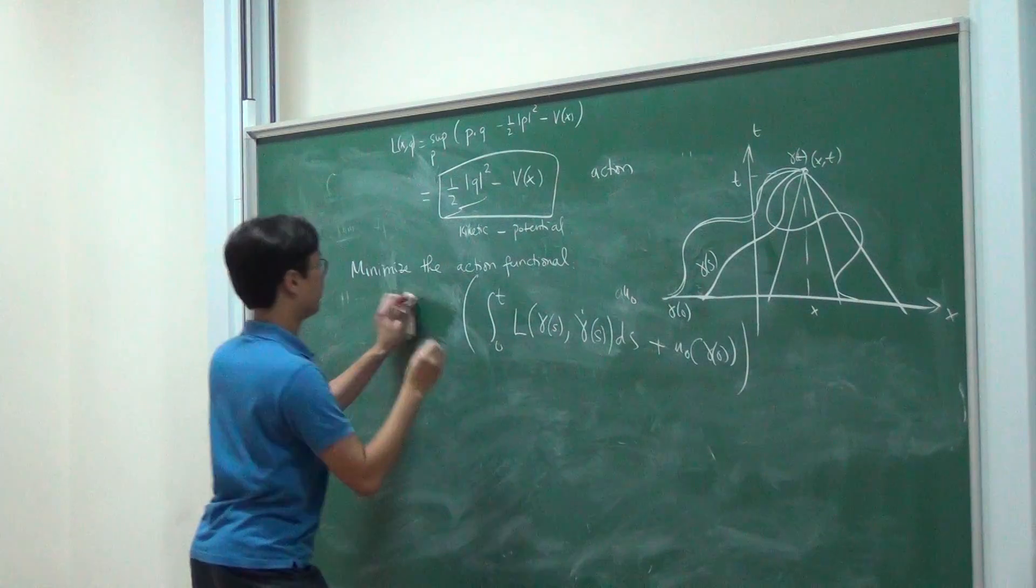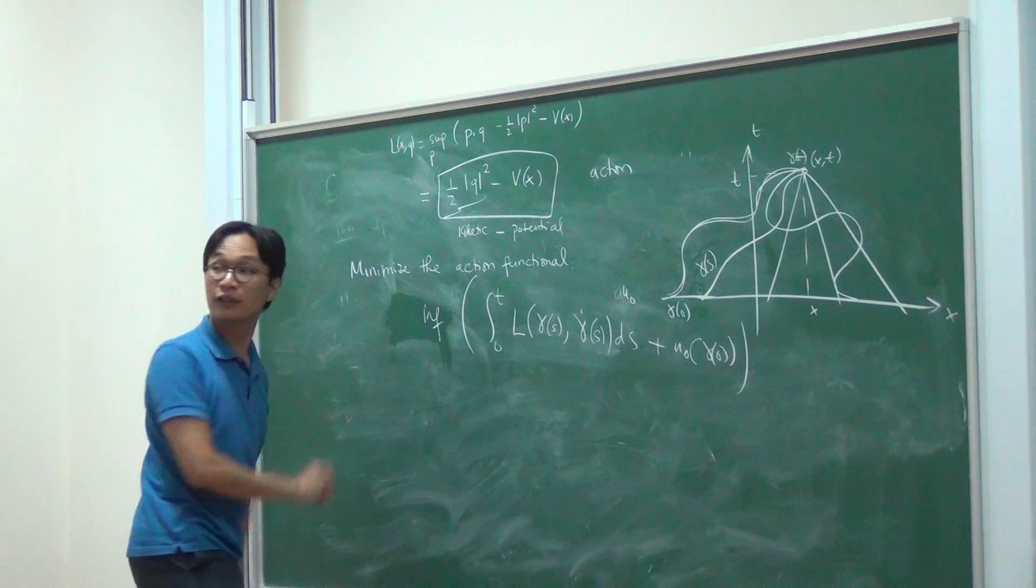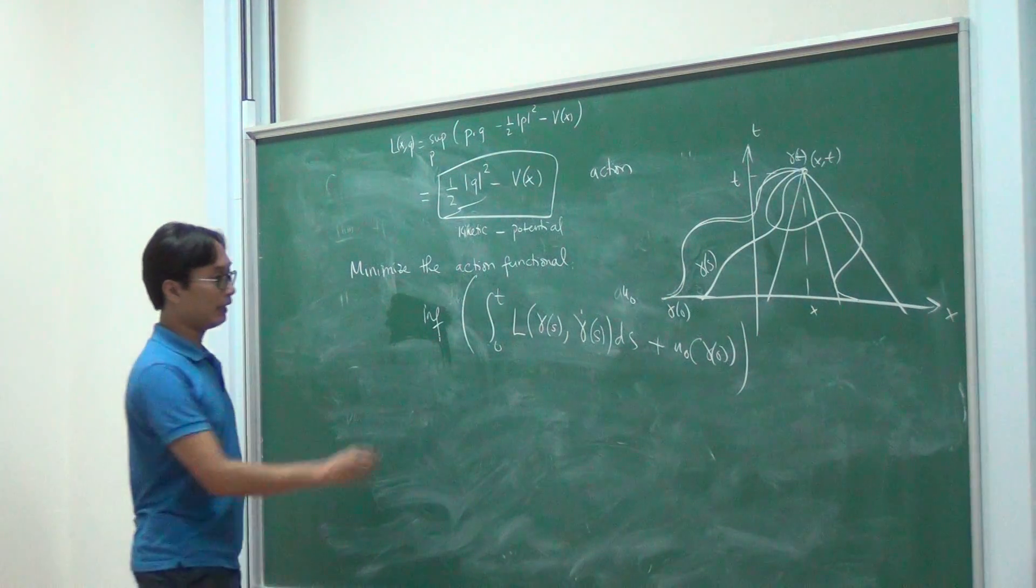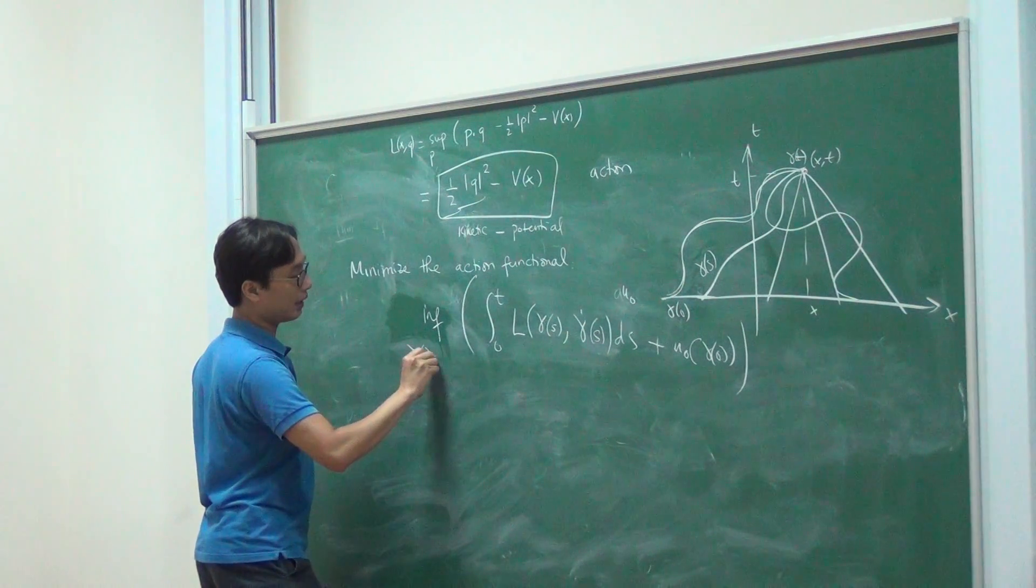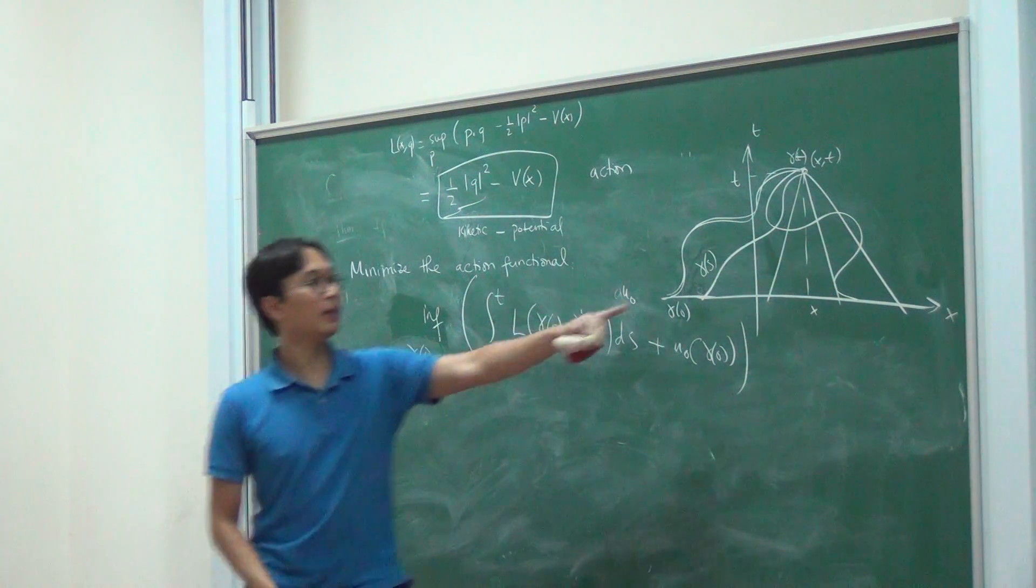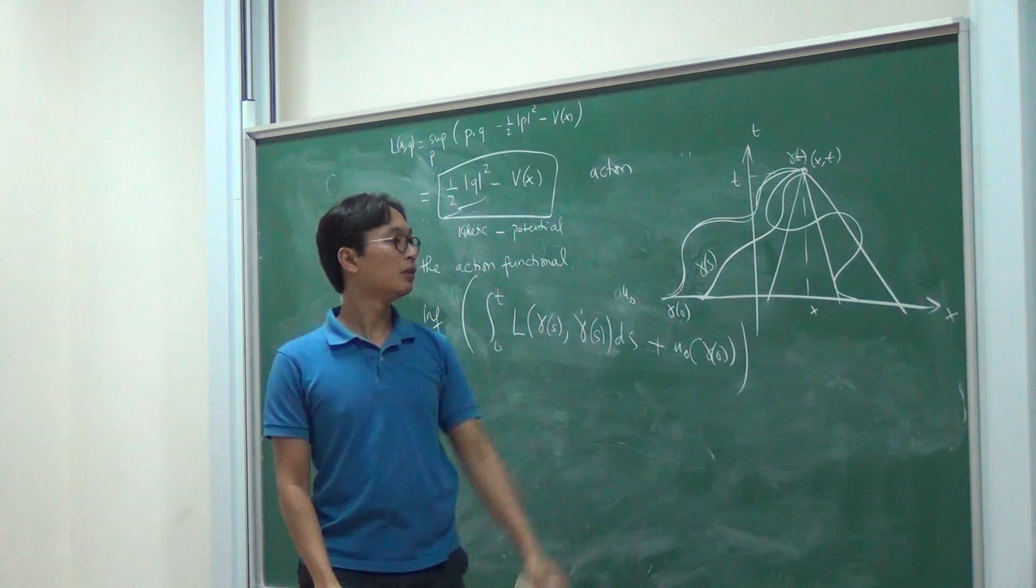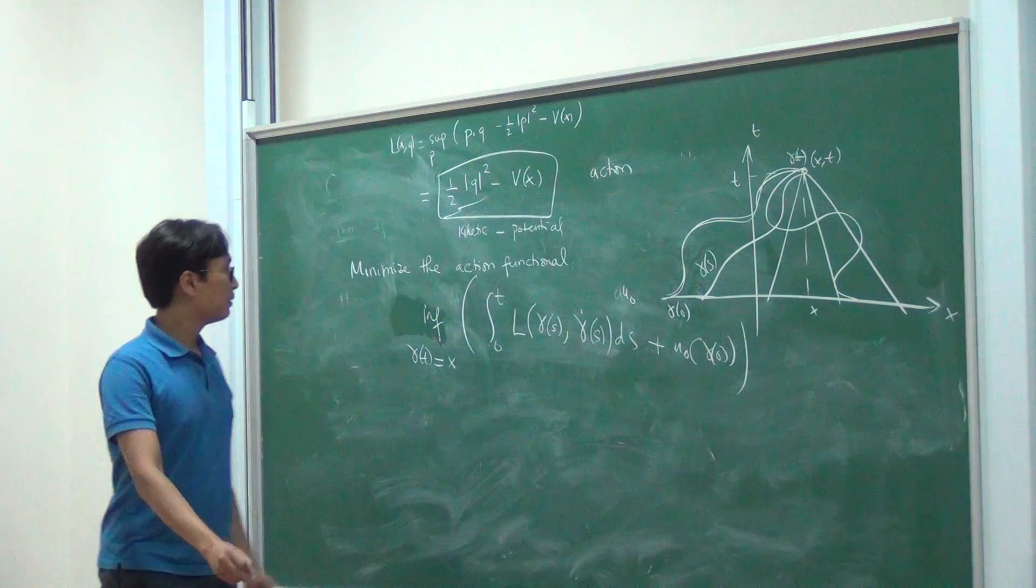So I need to do this minimizing problem. So this is the action function. And I know that my destination, gamma t is equal to x star.